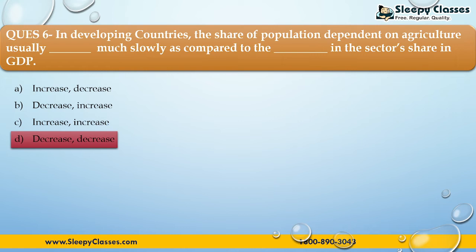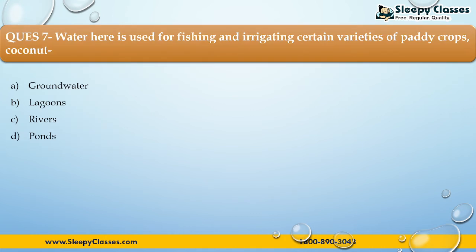The next question: Which water body is used for fishing and irrigating certain varieties of paddy crops and coconut? First, groundwater; Second, lagoons; Third, rivers; Fourth, ponds. The correct answer is option B — lagoons. Lagoon water is brackish, so it is not fit for drinking, but it is used for fishing and to irrigate paddy crops and coconut.